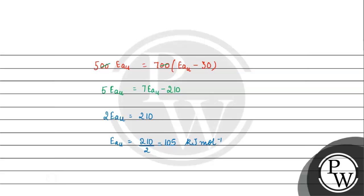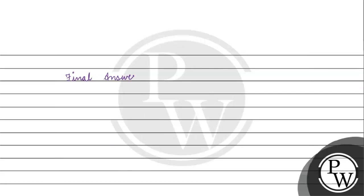Now, we have been asked for the energy of activation for the catalyzed reaction. The energy of activation for the catalyzed reaction is 30 less than that of the uncatalyzed reaction. So the energy of activation for the catalyzed reaction equals 105 minus 30, which is 75 kilojoule per mole. I hope you understood it well. Thank you and all the best.